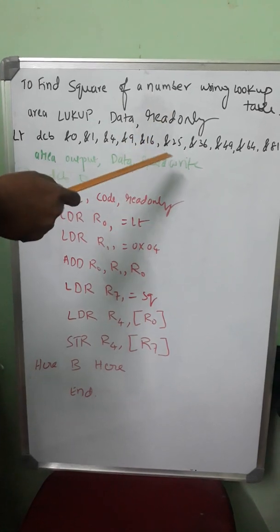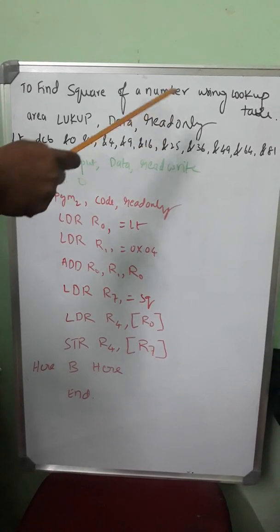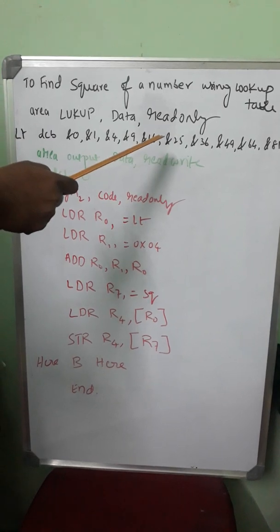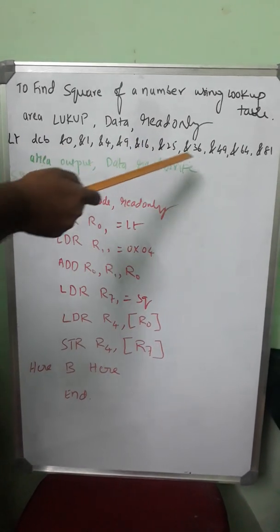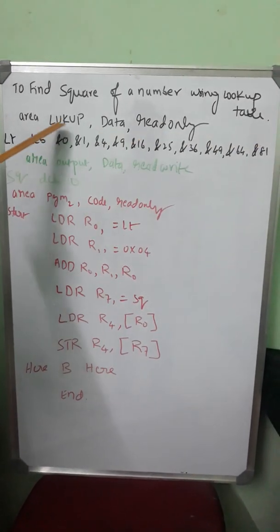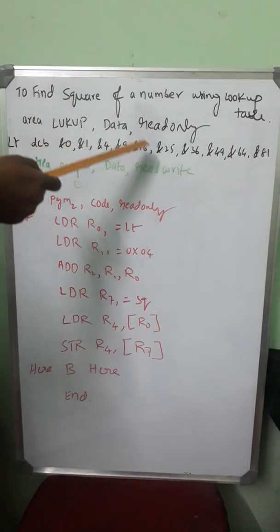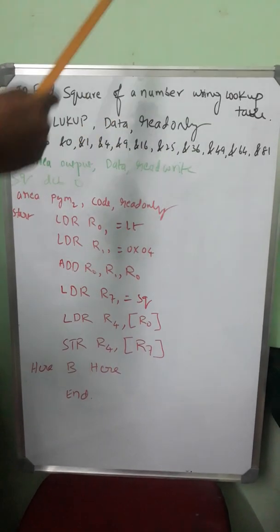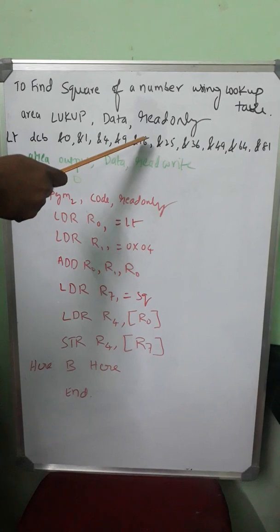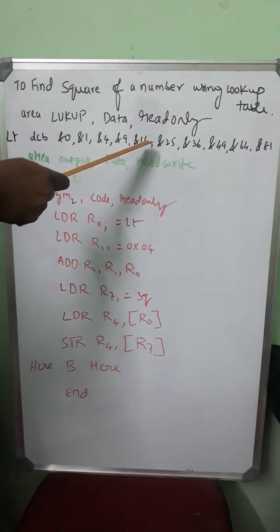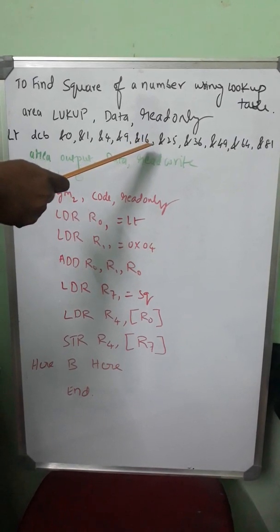So you arrive at the location where the square of a number for a particular input is stored. You're going to create the table and reach the location using the input and access the equivalent from that particular location. That is what the lookup table is.